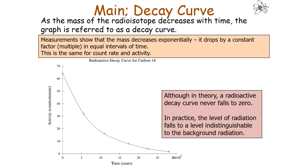As the mass of the radioisotope decreases with time, this graph is referred to as a decay curve. Measurements show that the mass decreases exponentially, dropping by a constant factor of 50% in equal intervals of time — and the same applies to count rate or activity.